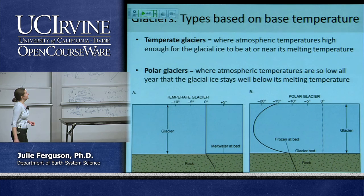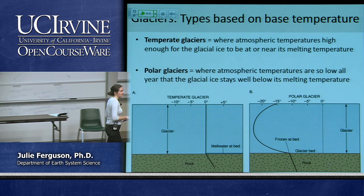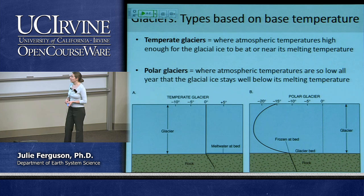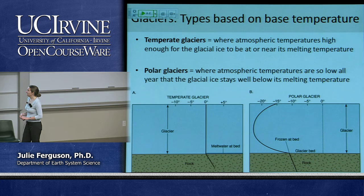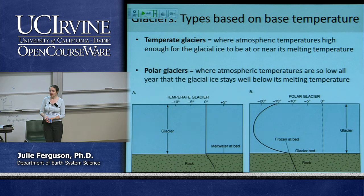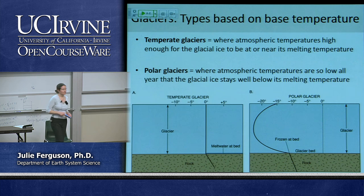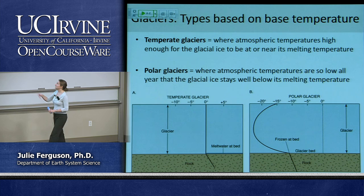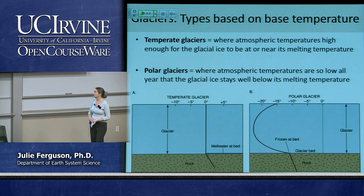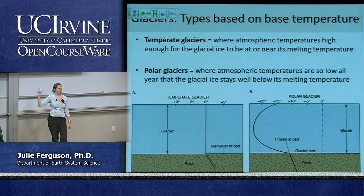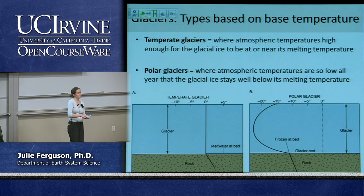We can also classify glaciers by the temperature at their base, which controls how they move. Temperate glaciers are the warmer type — the ice is close to its melting point all the way from the top to the base, so there tends to be a layer of meltwater at the bottom. Polar glaciers, found in much colder environments, are frozen at the base. Temperate glaciers move faster because they have that nice layer of water to slide on.